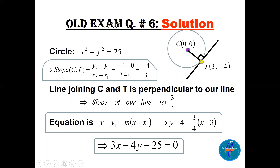Using slope 3/4 and point (3, −4): y − (−4) = (3/4)(x − 3), so y + 4 = (3/4)(x − 3). Simplifying the whole equation gives 3x − 4y − 25 = 0. You can write it in any form you like, but this is the equation in general form. You can check the answer.